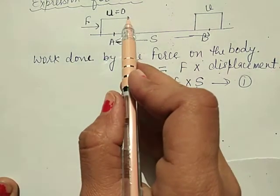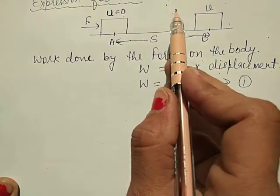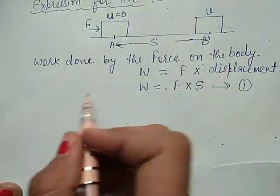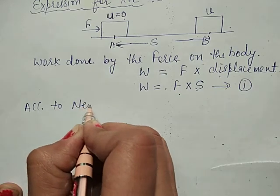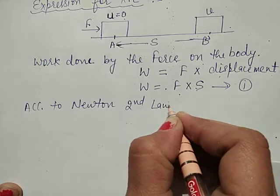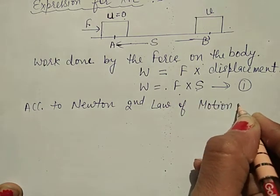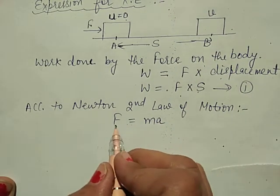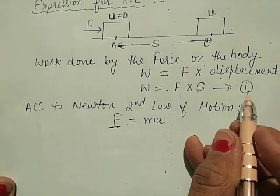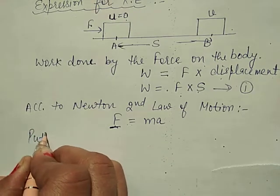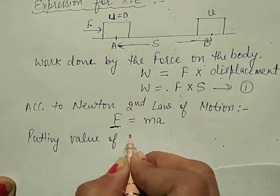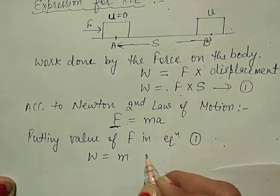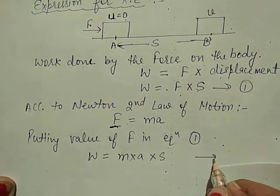The velocity of the body changes from 0 to V, so the body is accelerated. A is the acceleration of the body. According to Newton's second law of motion, F = MA. Putting this value of F into equation number 1 gives W = M × A × S. This is equation number 2.